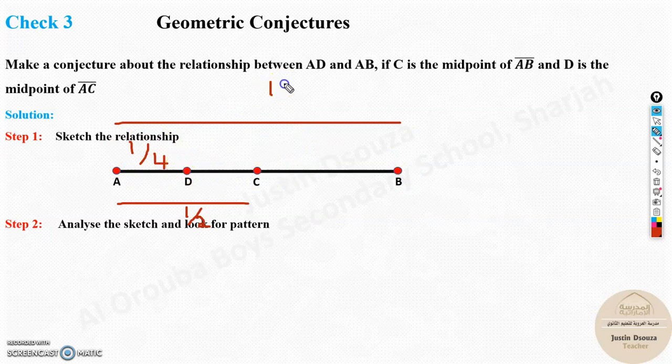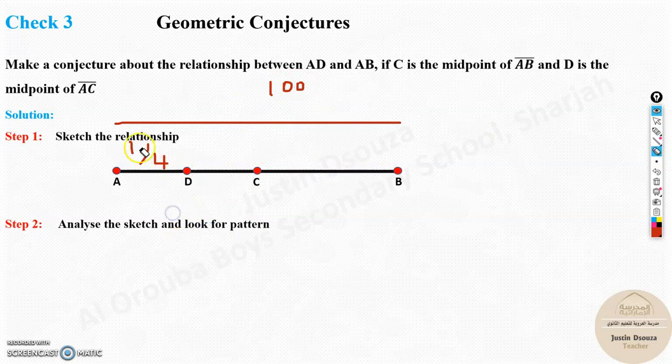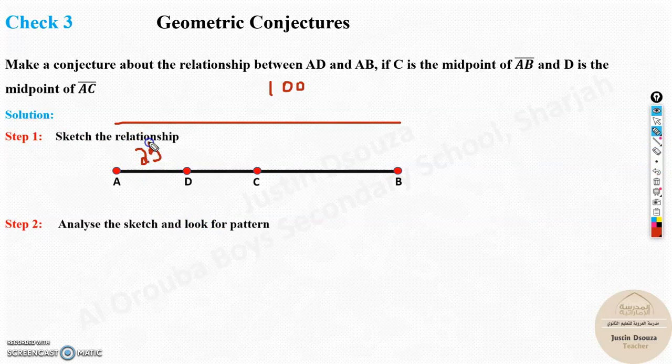In better understanding, if this is 100 centimeters, 1 fourth of 100 would mean 25. So this would be 25. This is the relationship. Why? Because C is the midpoint of AB and D is again another midpoint of AC.